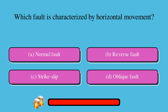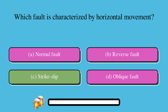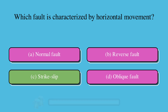Which fault is characterized by horizontal movement? A. Normal fault, or B. Reverse fault, or C. Strike-slip, or D. Oblique fault? The correct answer is C. Strike-slip.